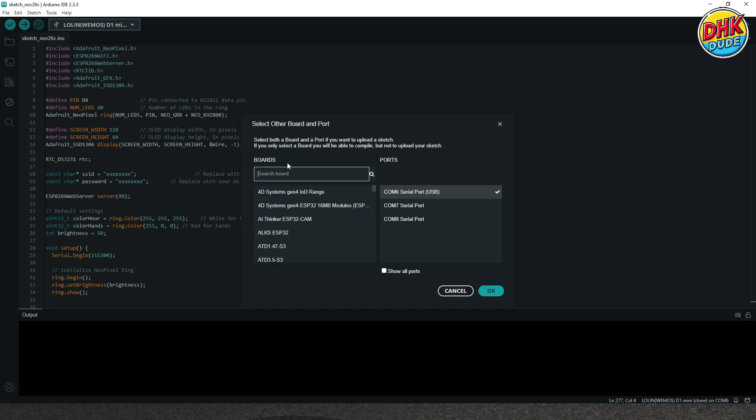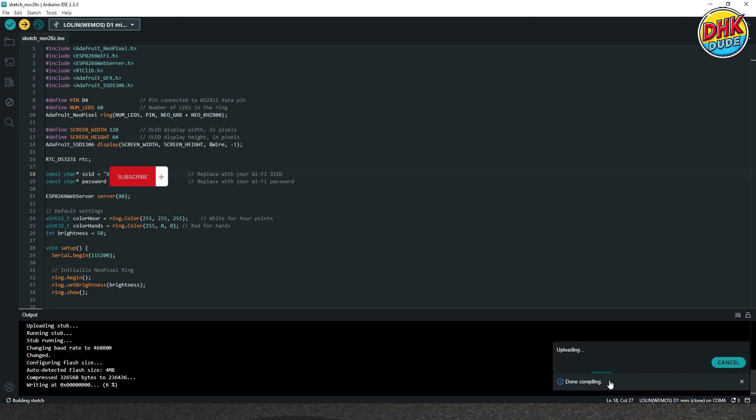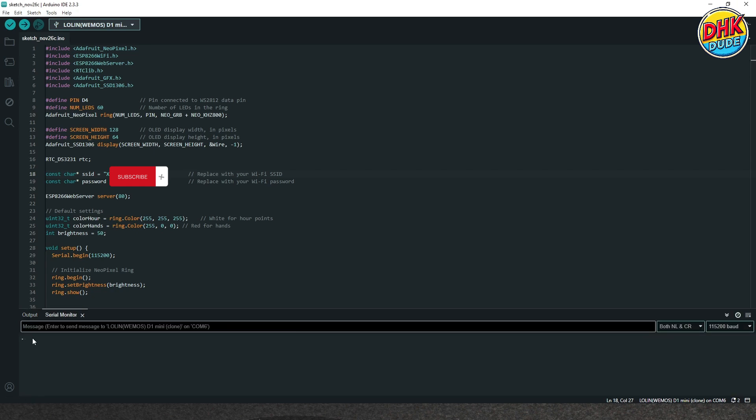Select the board import number and hit Upload button to flash the code to the microcontroller. Once the sketch uploaded successfully, open Serial Monitor and check the IP address of the web server. You can access web server to modify settings of your clock. And now it's showtime.